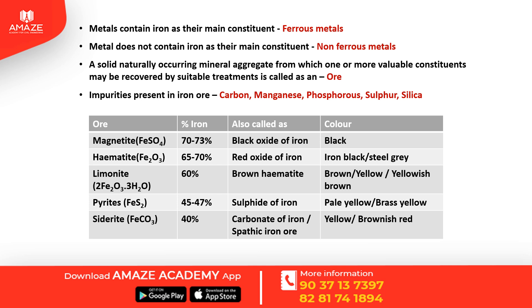Limonite has an iron content of 60% and is also called brown hematite. Its color ranges from brown to yellow to yellowish brown.